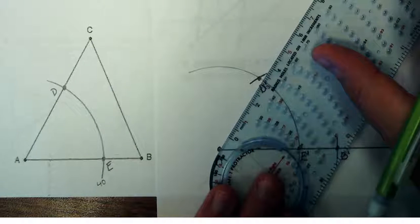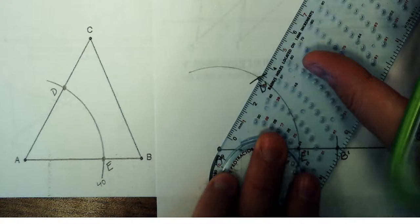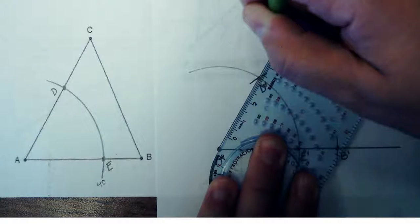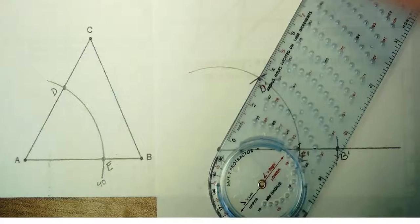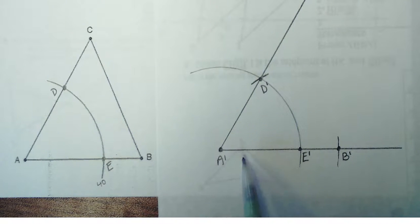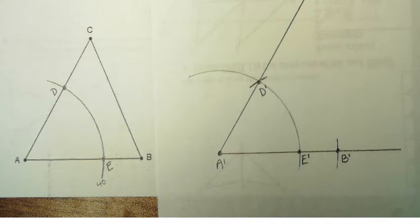So right now I have copied the side AB and I have copied angle A. So we have side angle. And then I'm going to copy the side AC. So that's similar to what we did as our first step.